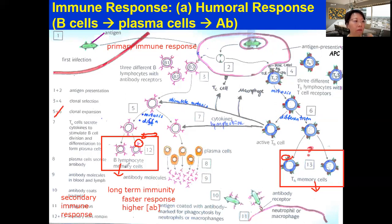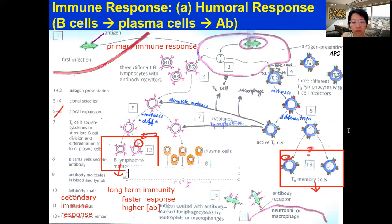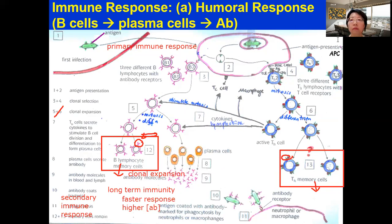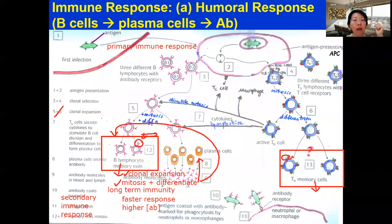Upon exposure to the same antigen, clonal expansion of memory cells will happen, which means the memory cells will divide by mitosis and then differentiate into more plasma cells and more memory cells. These plasma cells will then secrete antibody, and this antibody can quickly bind to the antigen of the pathogen. There are six possible ways to remove the pathogen from the body.